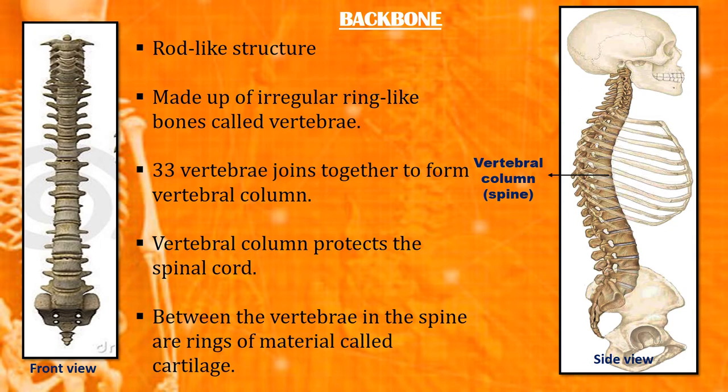Since the backbone is made up of many small bones, we are able to bend and twist the backbone in different directions. Between the vertebrae and the spine are rings of material called cartilage.